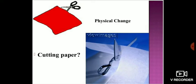Another example: cutting of paper. When we cut the paper, only the size or shape of the paper changes, but the properties of the paper remain the same. If you were using that paper for written work before, you can still use the small piece of paper for writing. There is no new substance formation — that is a kind of physical change.